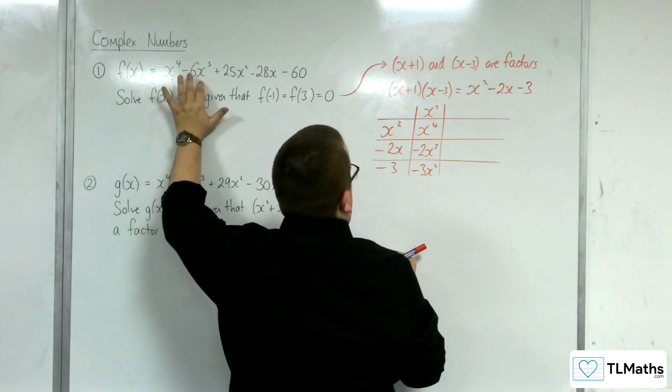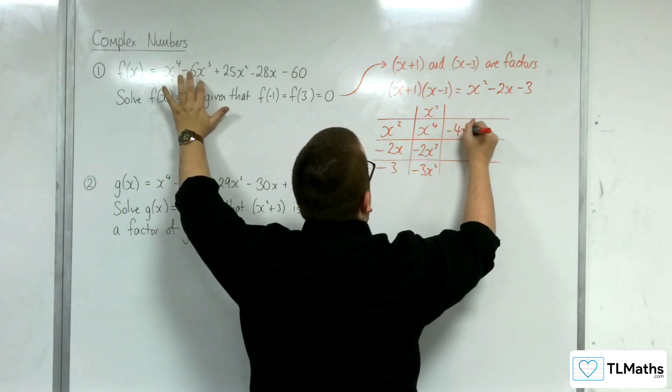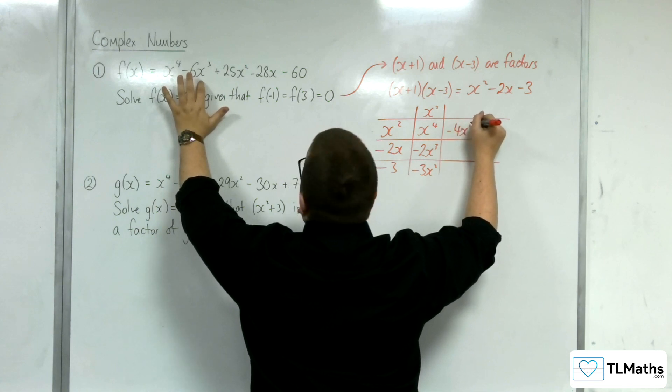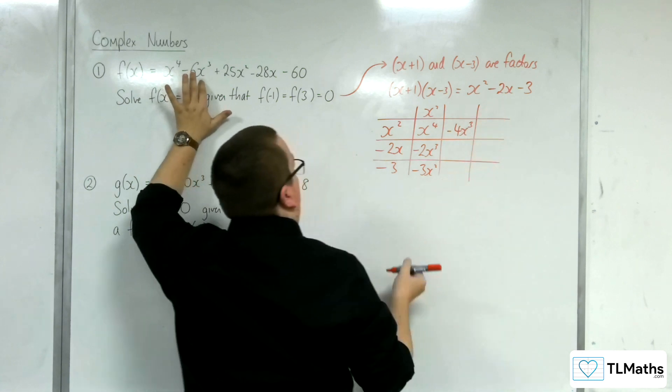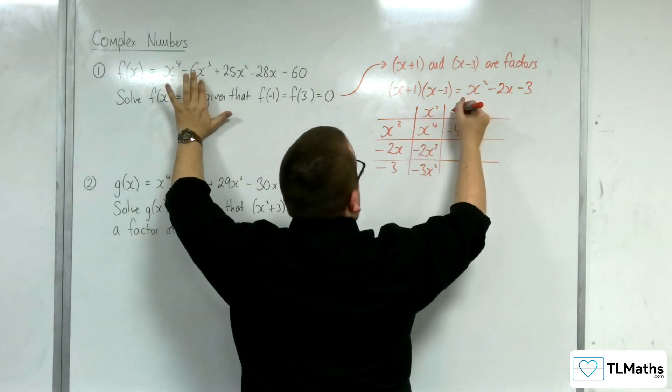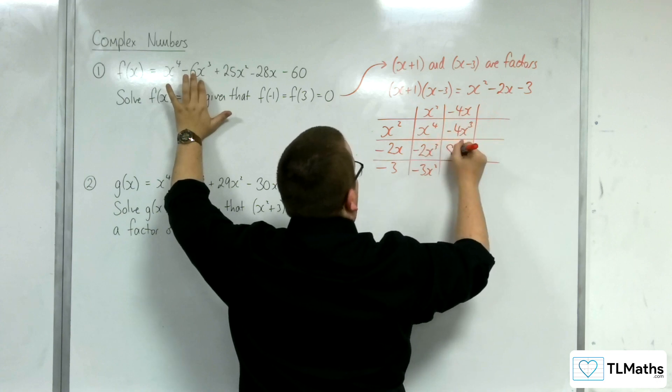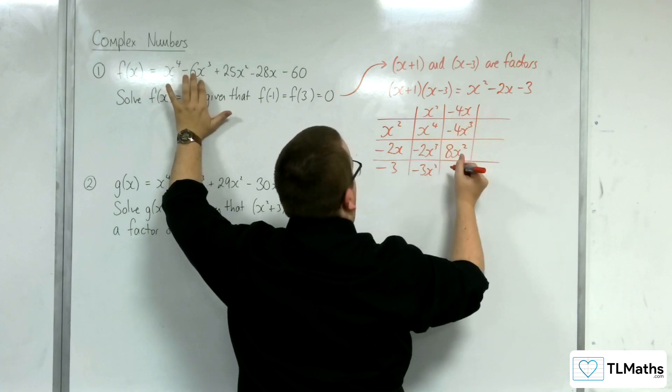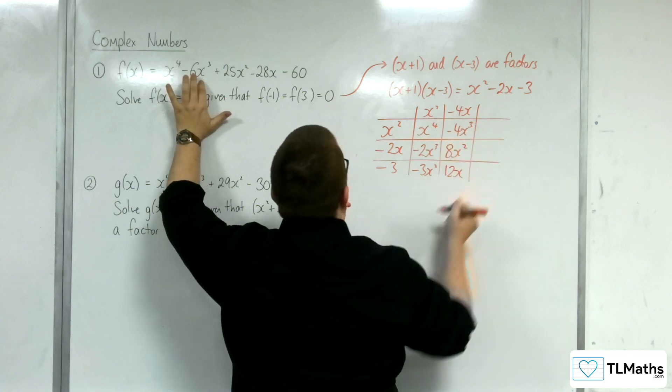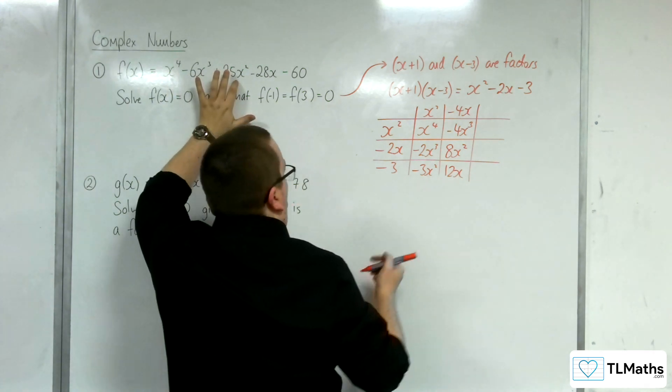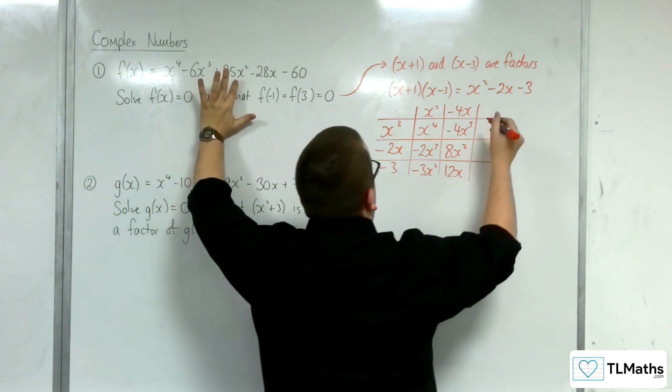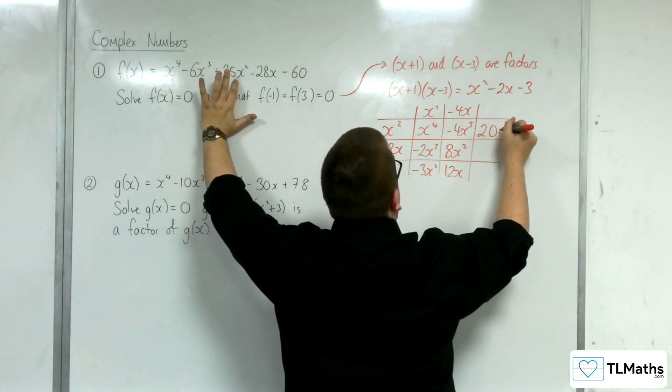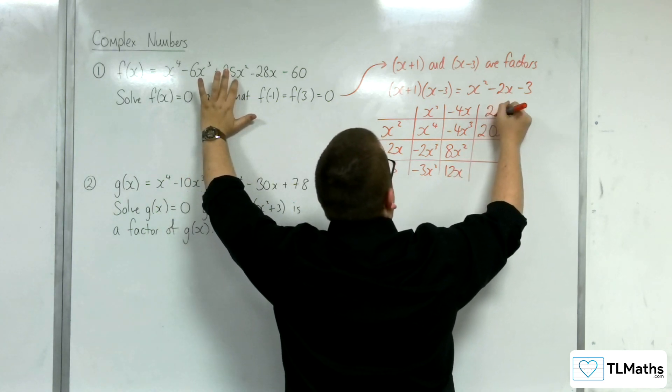Now I need -6x³, so I need minus 4x³ there. So this would leave me with -4x in here. So we'd have 8x² and then 12x. Now I need 25x². I've currently got 5x², so I'd need another 20x². So I'd have to have 20 there.